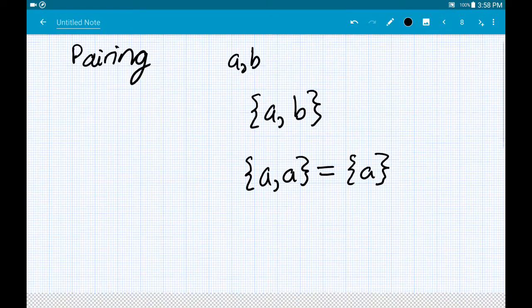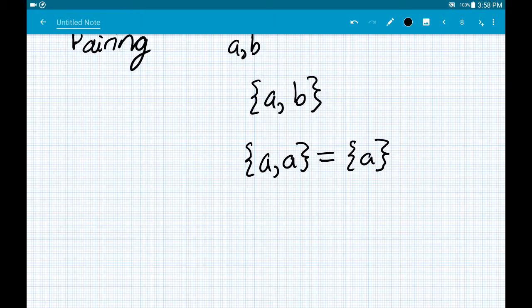So that's one thing that we get, the existence of singletons. If anything exists, actually at this point in the axiomatic development, we don't actually know whether anything exists, but we will get there eventually.